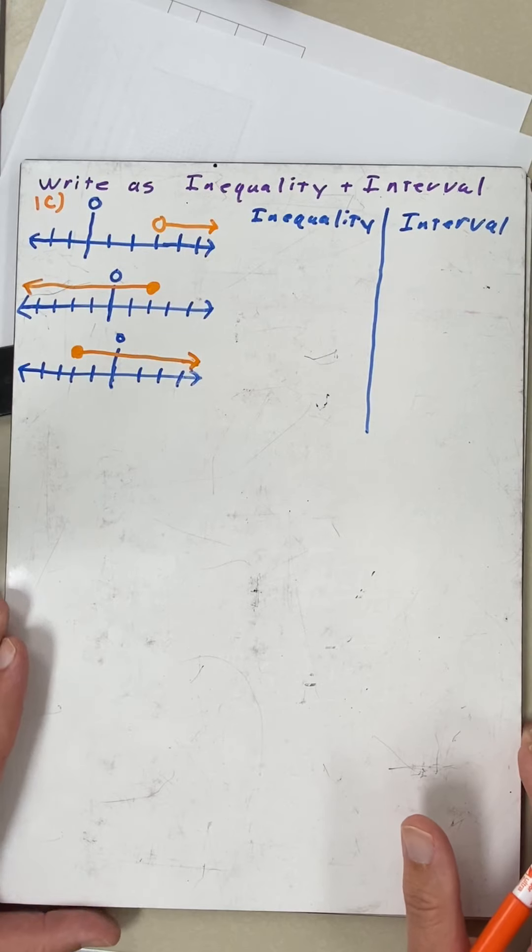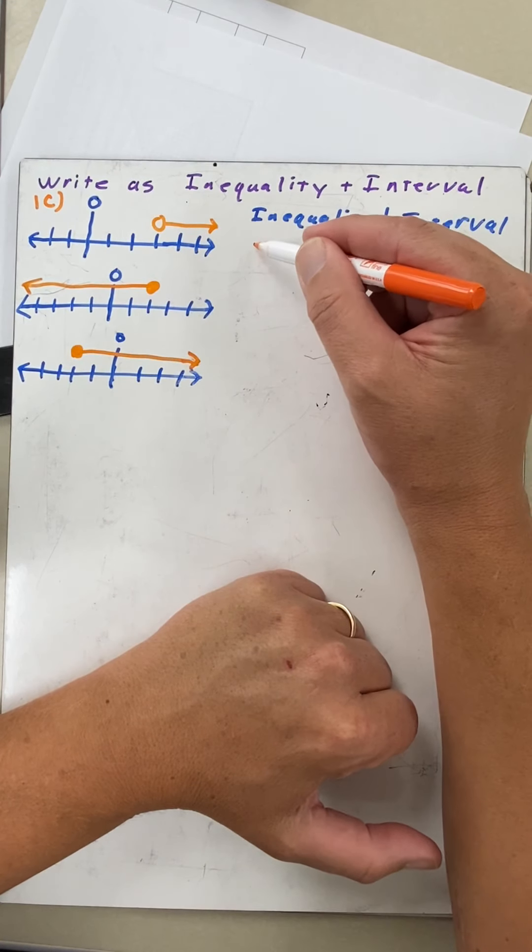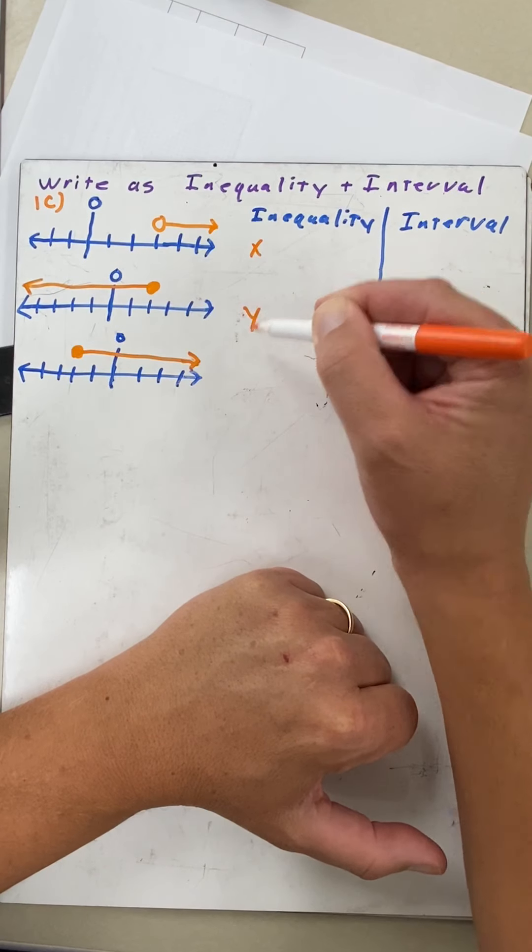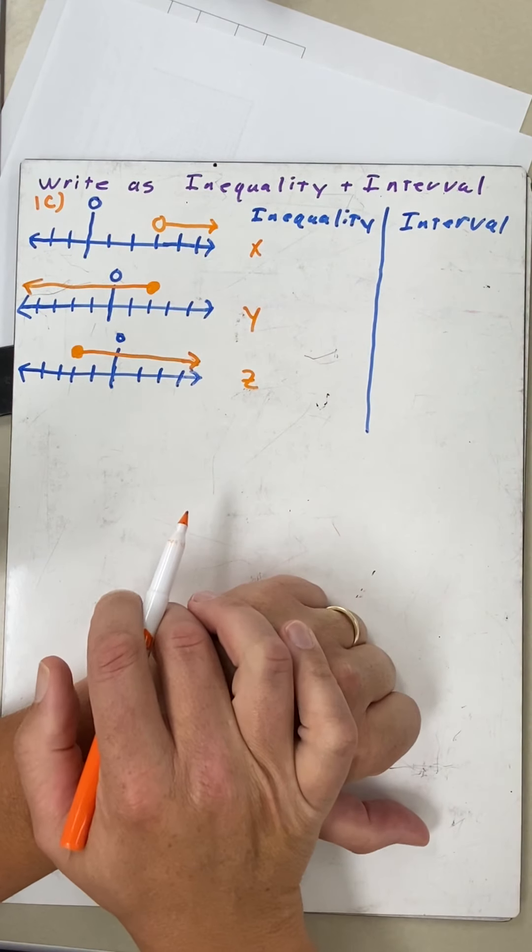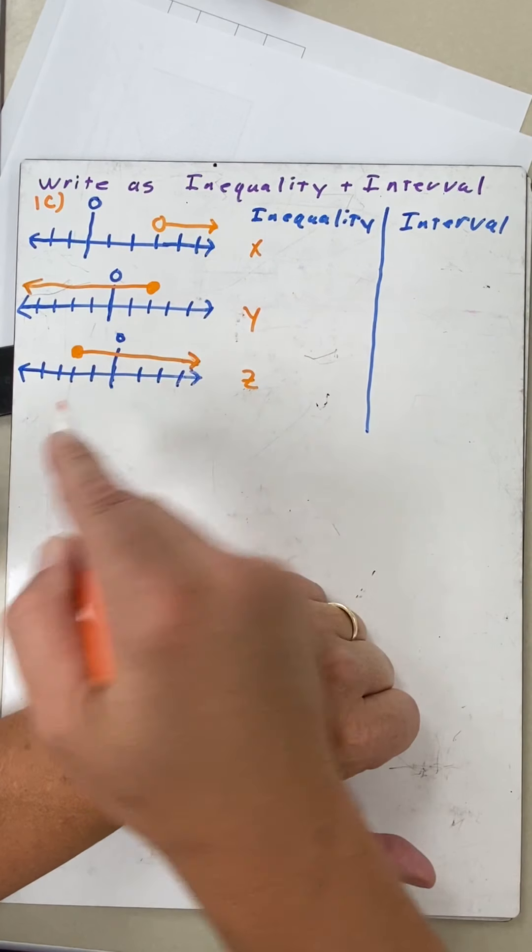All right, we're back. I'm going to start out. I'm just going to pick random letters here. Let's go X, Y, and Z as my letters—it doesn't matter, I just made those up. I'll write down my numbers: three, two, and negative two.